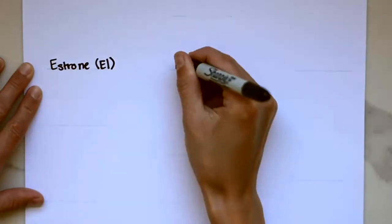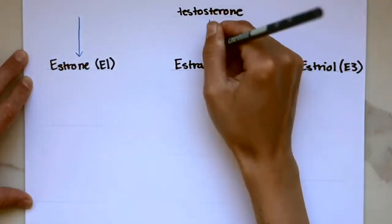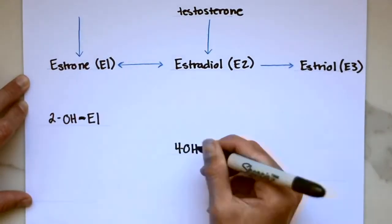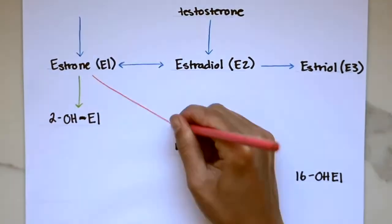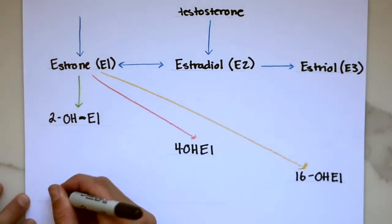So our three different types of estrogen, estrone, estradiol, and estriol are metabolized in the liver through three pathways into the 2-hydroxyl, 4-hydroxyl, and 16-hydroxyl estrogen. This is known as phase one of estrogen metabolism.